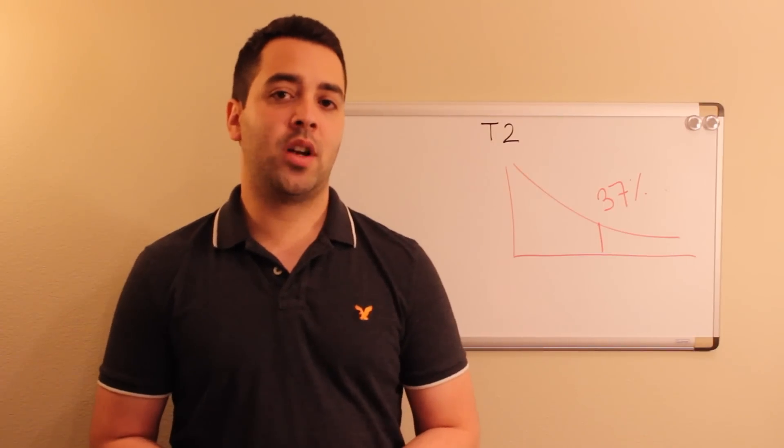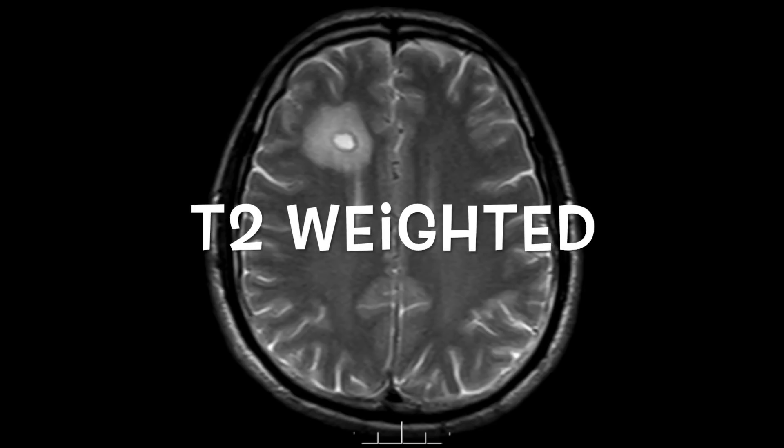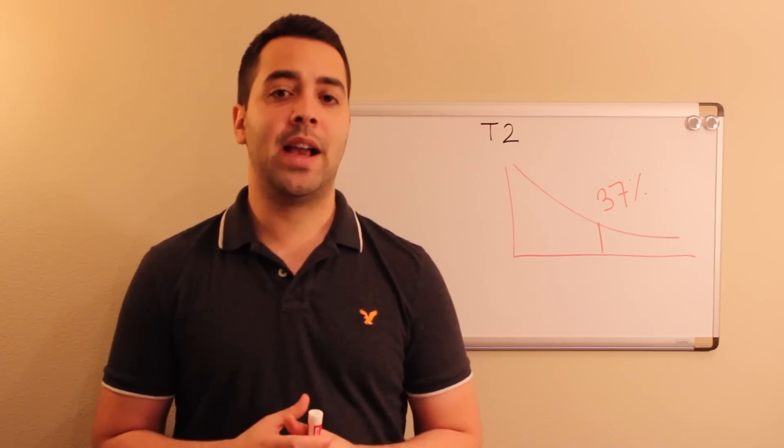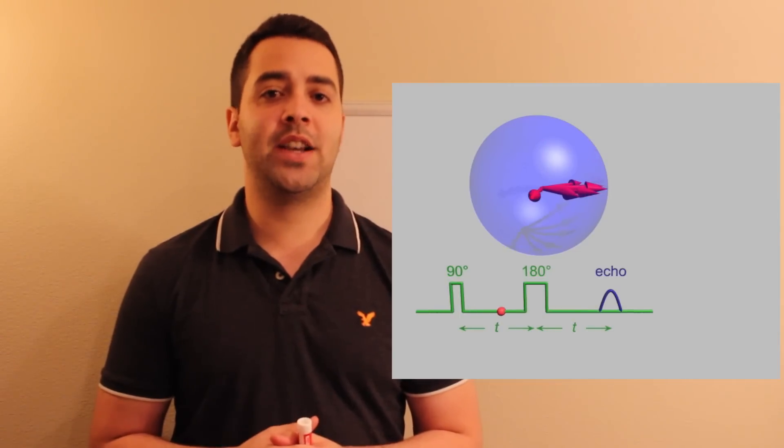Hi everyone, today we're talking about T2 weighted imaging. T2 weighted imaging is part of what's known as the spin-spin interactions. That's another type of magnetization that we have as the protons are flipped. There's a magnetization that occurs.